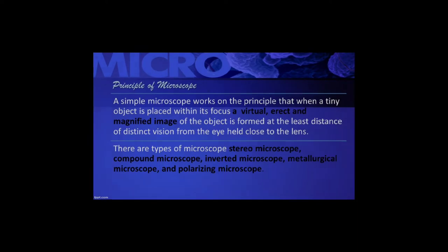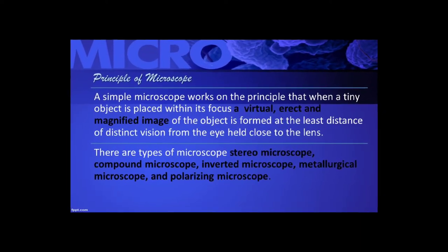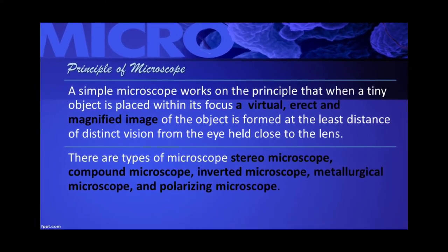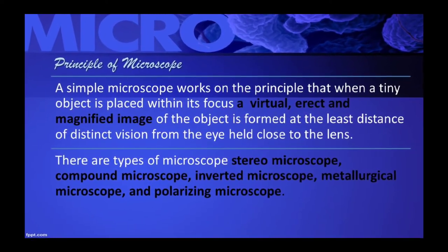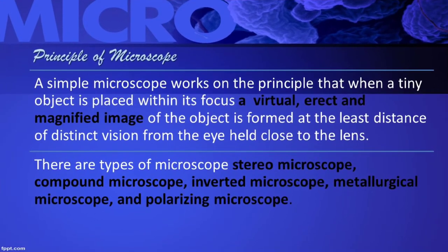Principle of Microscope: A simple microscope works on the principle that when a tiny object is placed within its focus, a virtual, erect and magnified image of the object is formed at the least distance of distinct vision from the eye held close to the lens. Types of microscope include stereomicroscope, compound microscope, inverted microscope, metallurgical microscope, and polarizing microscope.